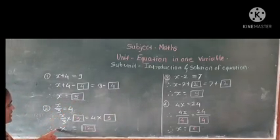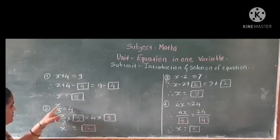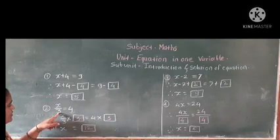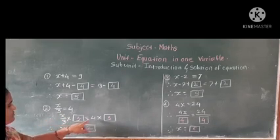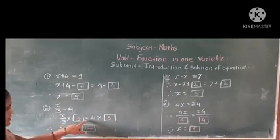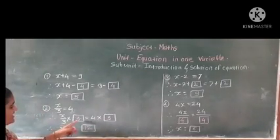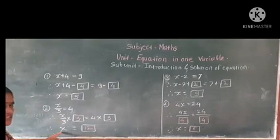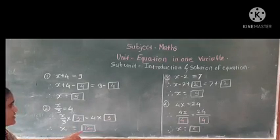Next example: x upon 3 is equal to 4. Here 3 is present in division form, so we take the opposite operation and multiply 3 by both sides. x upon 3 times 3 equals 4 times 3. The 3 gets cancelled out, only x remains on the left hand side, and 4 times 3 is 12. So the value of x is 12.